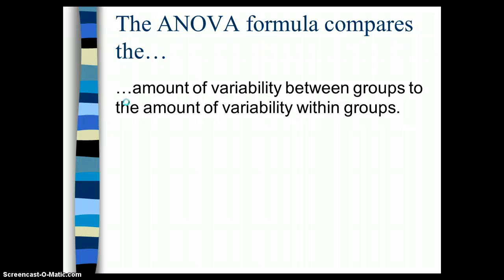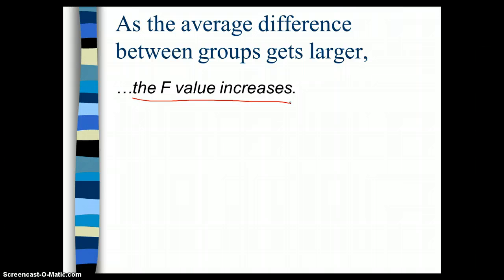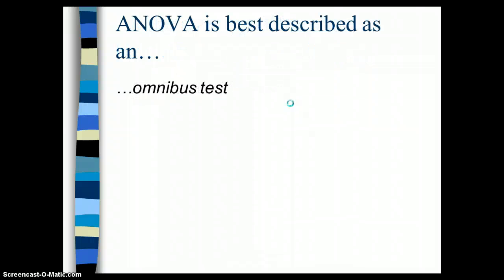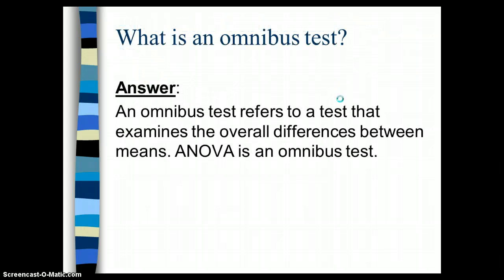The ANOVA formula compares the amount of variability between groups to the amount of variability within groups. As the average difference between groups gets larger, the F value increases — meaning there's a better and better chance that the computed F value is going to be larger than the critical F. Remember that ANOVA is best described as an omnibus test, meaning we can only find whether or not there's a difference somewhere between the many groups. We don't know specifically which groups are significantly different from one another simply by calculating the F. An omnibus test refers to a test that examines the overall differences between means.